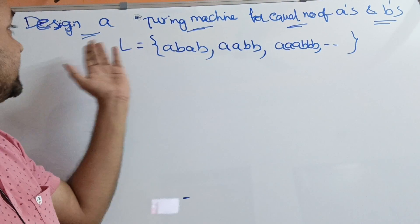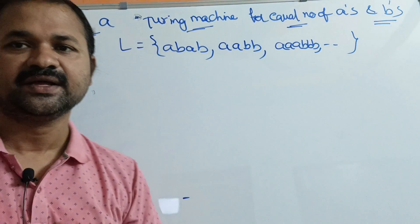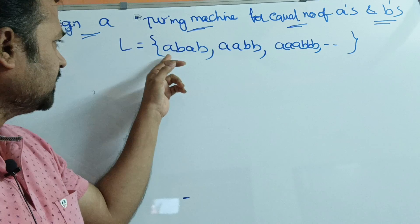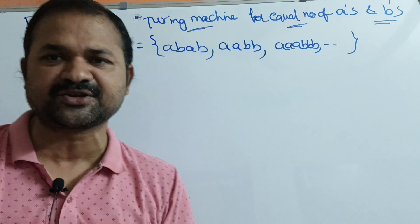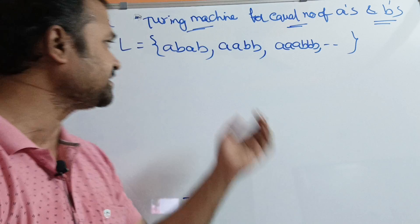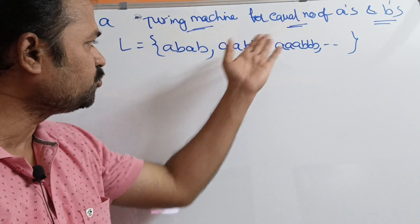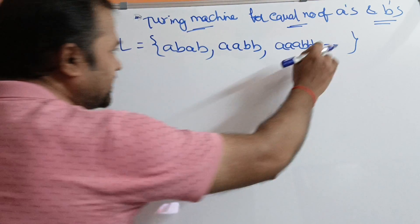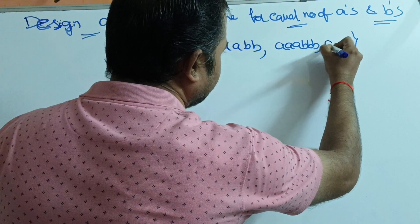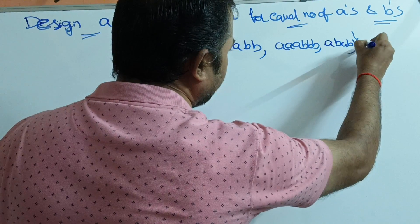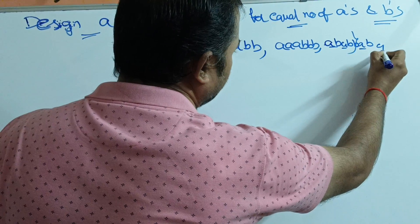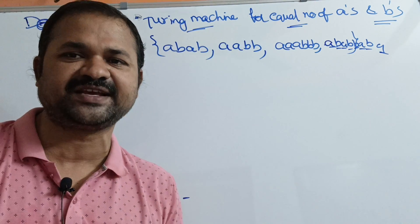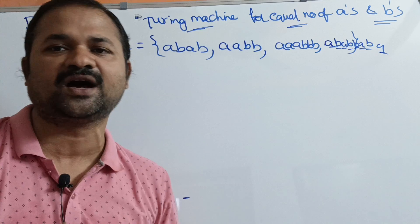Let's see this example. Design a Turing machine for equal number of A's and B's. Let us see the language here. A, B, A, B — number of A's are 2, number of B's are 2. A, A, B, B — number of A's are 2, number of B's are 2. Triple A, triple B — number of A's are 3, number of B's are 3. A, B, A, B, B, A — number of A's are 4, number of B's are 4. Likewise, we can write N number of strings. So, for this problem, we have to design the Turing machine.